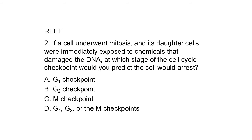We end section 11.5 with a second RIFT question. If a cell underwent mitosis and its daughter cells were immediately exposed to chemicals that damaged the DNA, at which stage of the cell cycle checkpoint would you predict the cell would arrest? A: G1 checkpoint; B: G2 checkpoint; C: M checkpoint; or D: G1, G2, or M checkpoints.